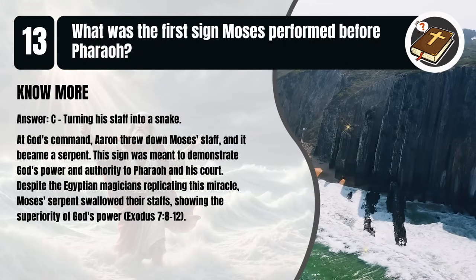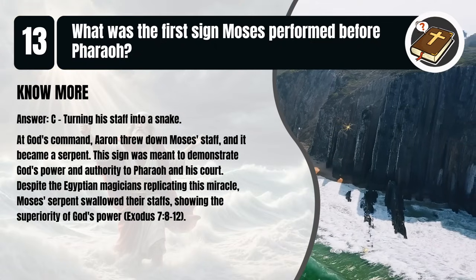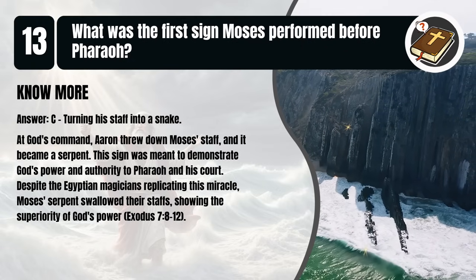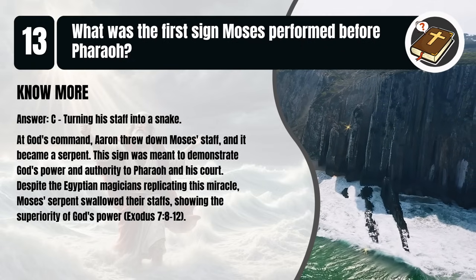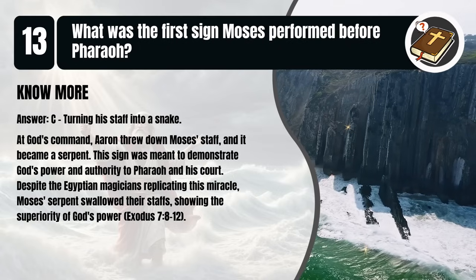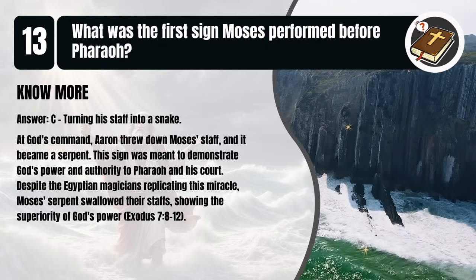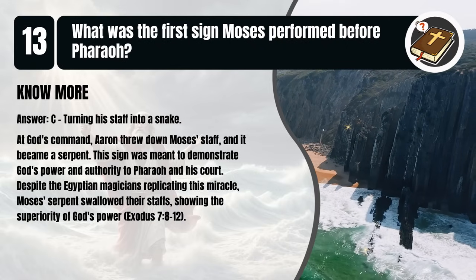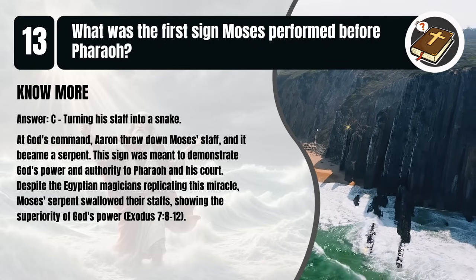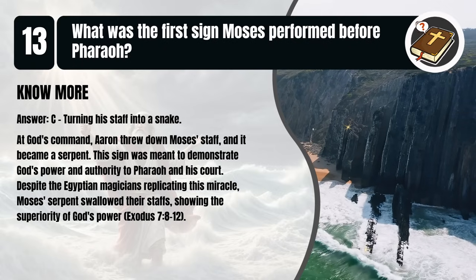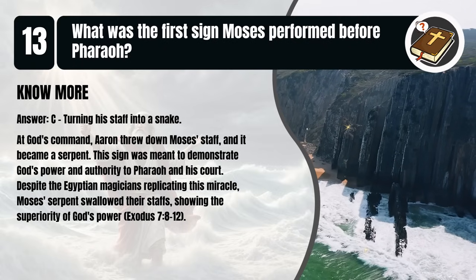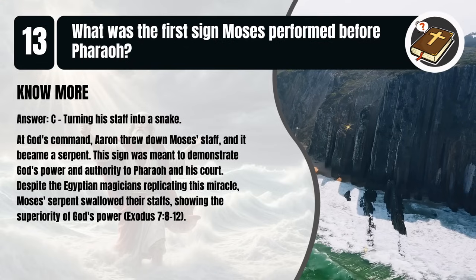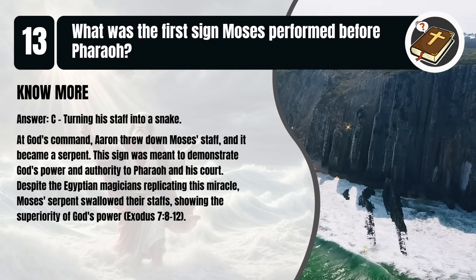That's C. Turning his staff into a snake. At God's command, Aaron threw down Moses' staff and it became a serpent. This sign was meant to demonstrate God's power and authority to Pharaoh and his court. Despite the Egyptian magicians replicating this miracle, Moses' serpent swallowed their staffs, showing the superiority of God's power. Exodus 7:8-12.